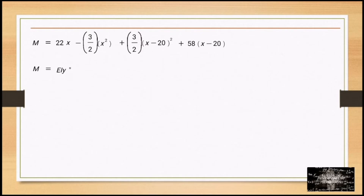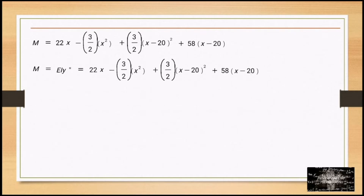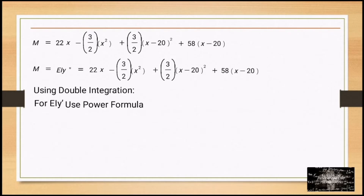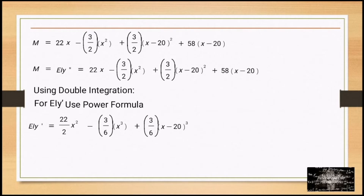So M equals EI·Y''. Using double integration and the power formula, EI·Y' equals (22/2)X² minus (3/6)X³ plus (3/6)(X−20)³ plus (58/2)(X−20)² plus C₁. This is Equation 1. Take note: these terms with the form (X−a) should not be expanded.